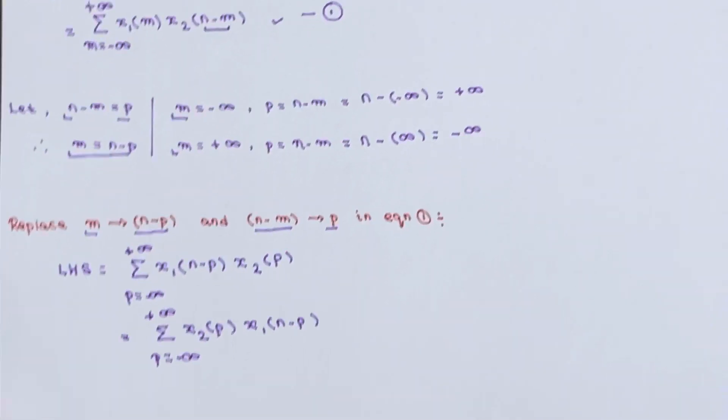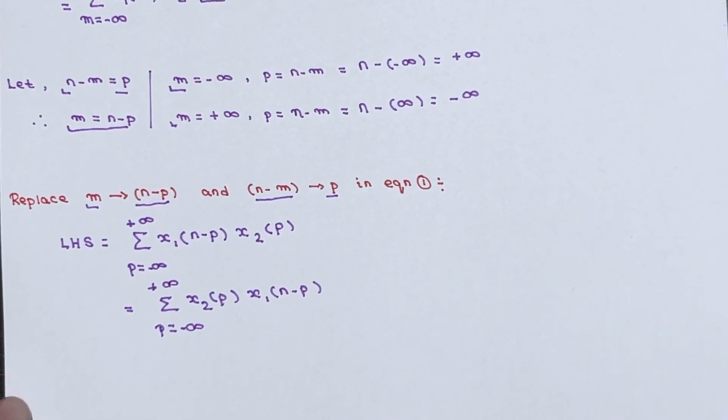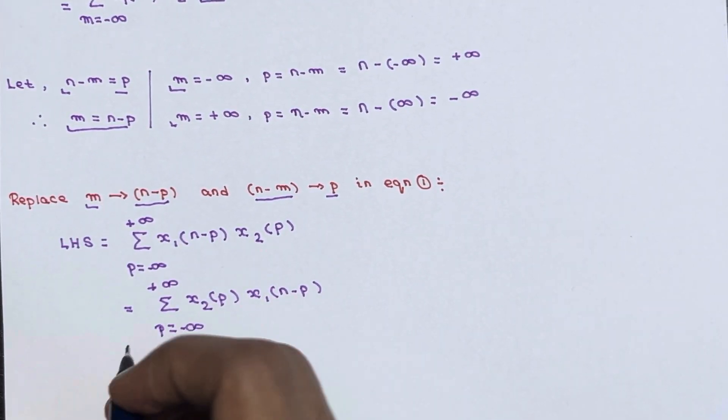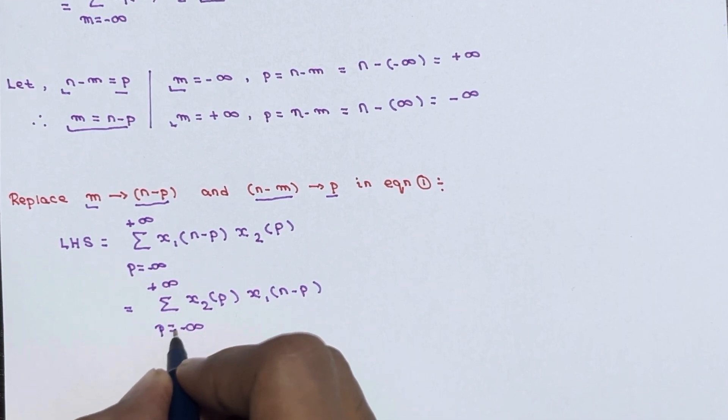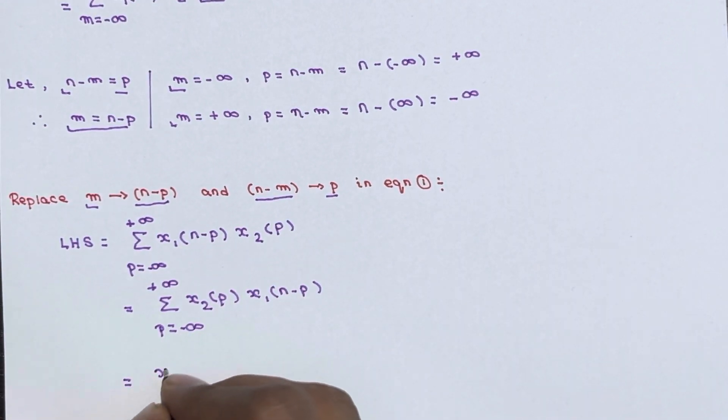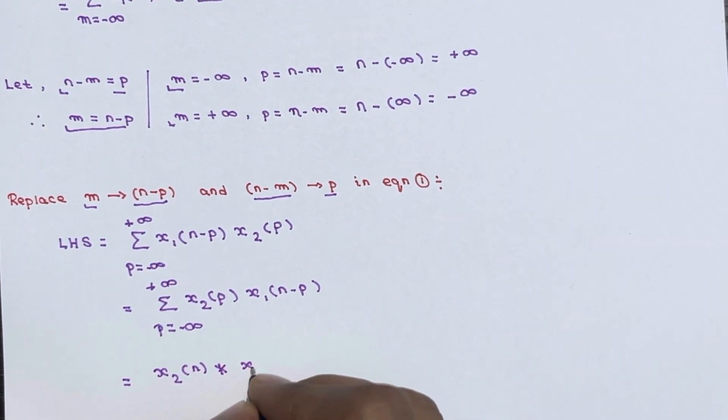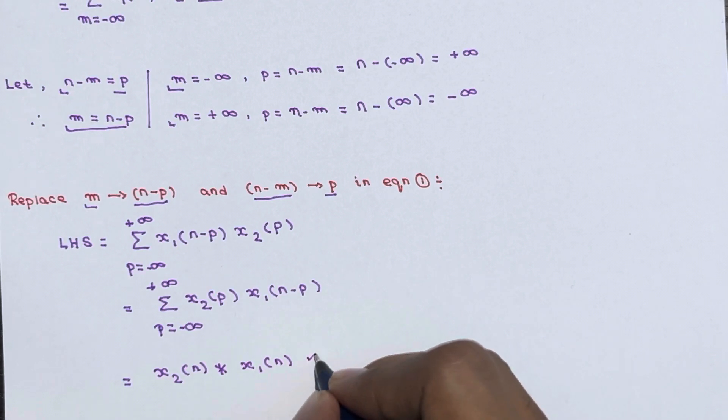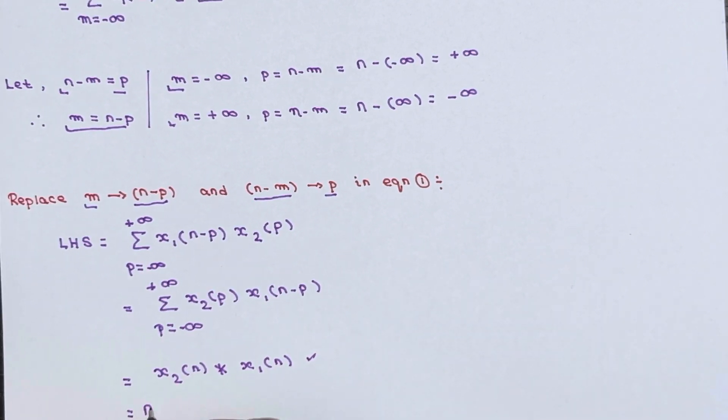Now if you see this, this is nothing but x2(p) into x1(n-p), and the limit of p ranges from minus infinity to plus infinity. So if you observe this, this is nothing but convolution of x2(n) and x1(n). So this is basically RHS.